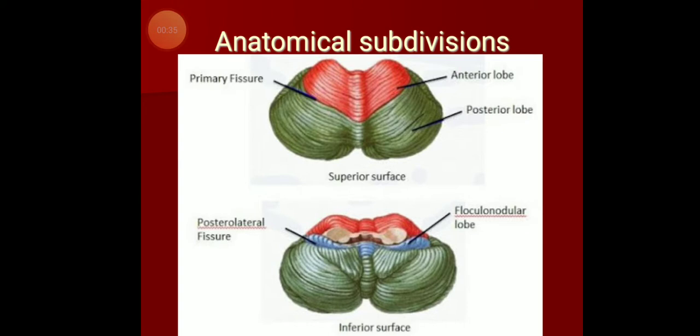In the figure, the red colored part is the anterior lobe, the green colored part is the posterior lobe, and the blue colored part is the flocculonodular lobe. In some textbooks, the posterior lobe is also denoted as the middle lobe.